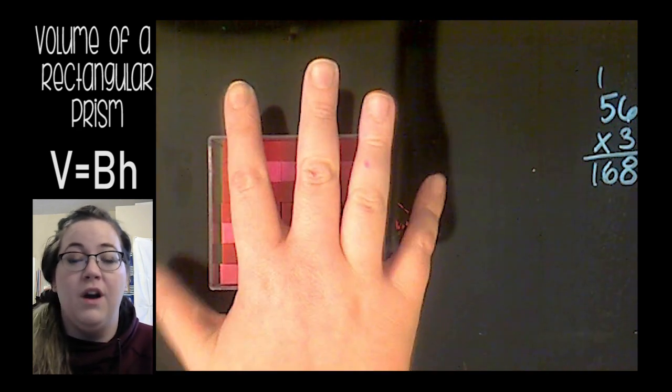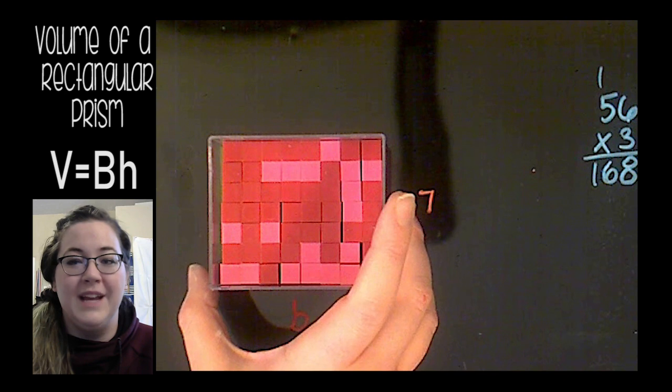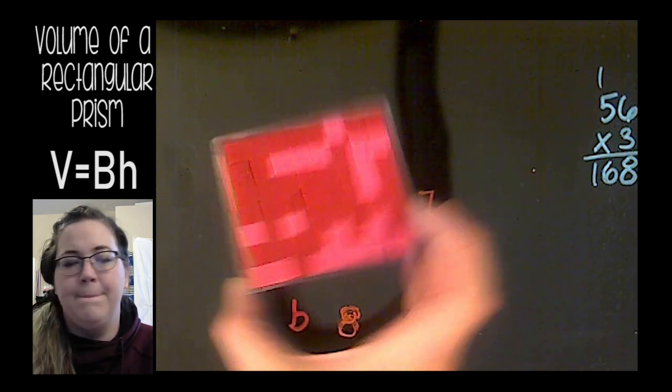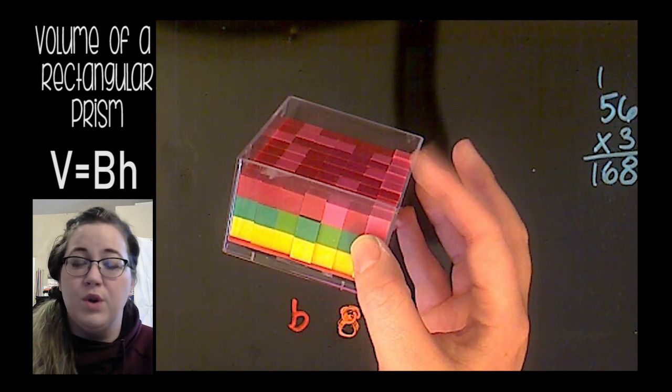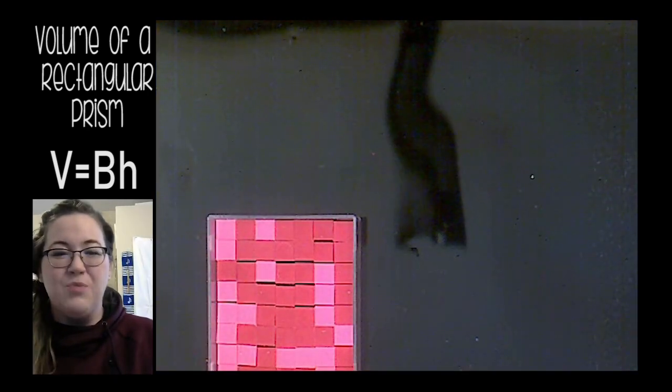My volume so far for my rectangular prism is 168, but I still don't have a complete height. I think I should be able to fit in one more row. I'm going to add some white.